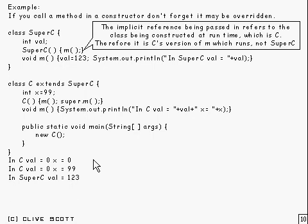That's what you've got to be careful of. Just remember that the implicit reference that's passed in here refers to the class that's being constructed at runtime, which in this case is C. Therefore, it's going to be C's version of M which runs, not SuperC's.